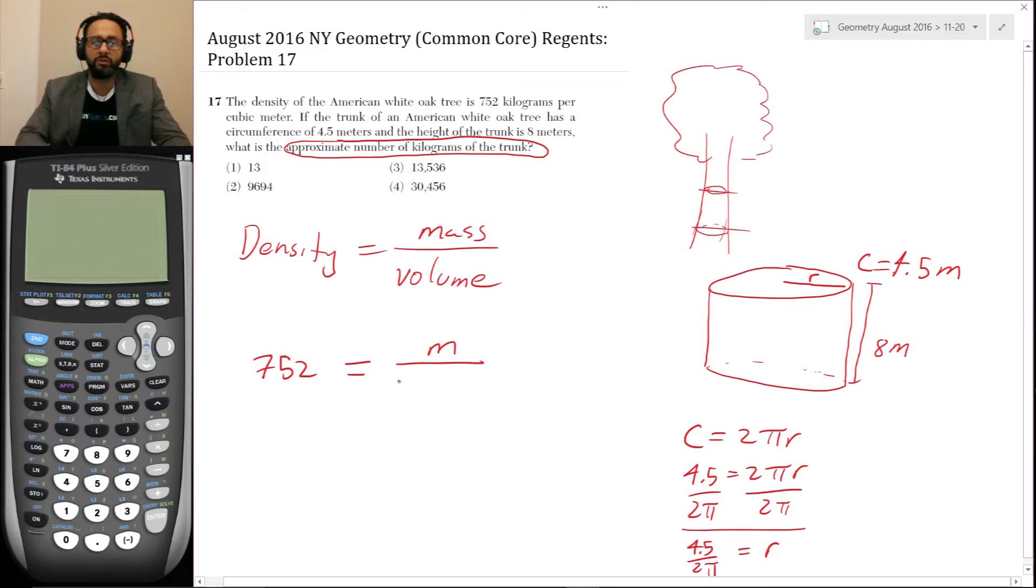So now the volume is equal to pi R squared H. So let's write these numbers down. So it's M over pi times R is 4.5 over 2 pi, squared times the height is 8.